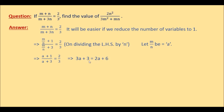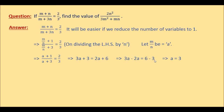Now we will add negative 2a to both sides of the equation. So 3a minus 2a on the left and 2a minus 2a gives 0 on the right. At the same time, we add negative 3 to both sides. So plus 3 and minus 3 on the left hand side gives 0, and 6 minus 3 on the right hand side. On the left hand side we have 3a minus 2a, and on the right hand side we have 6 minus 3.